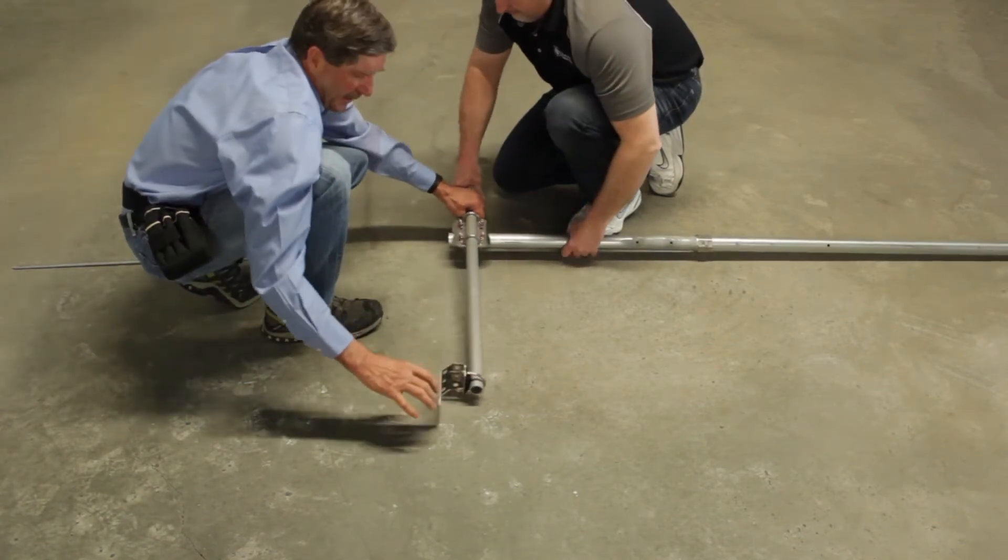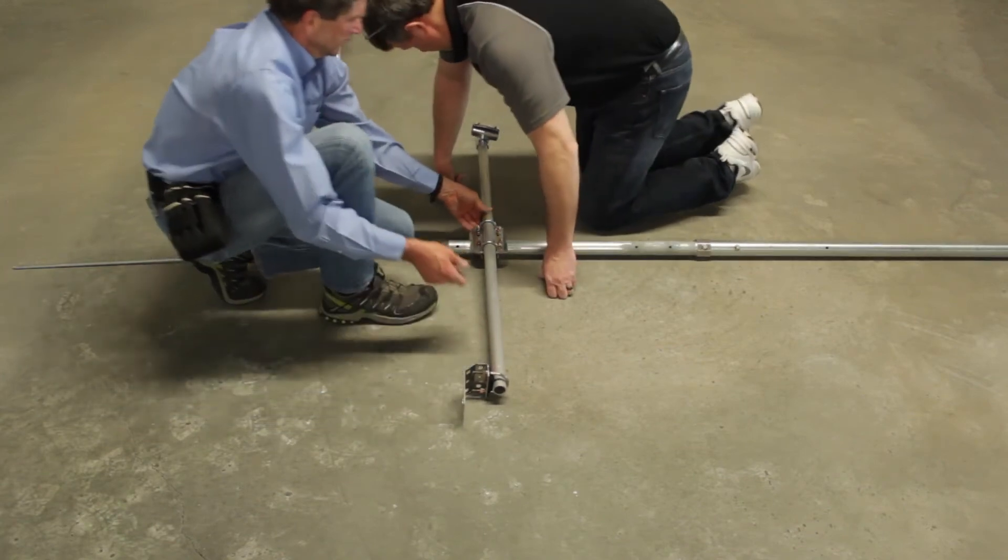Slide the crossarm into place over the end of the mast extension and slide it to the desired location.